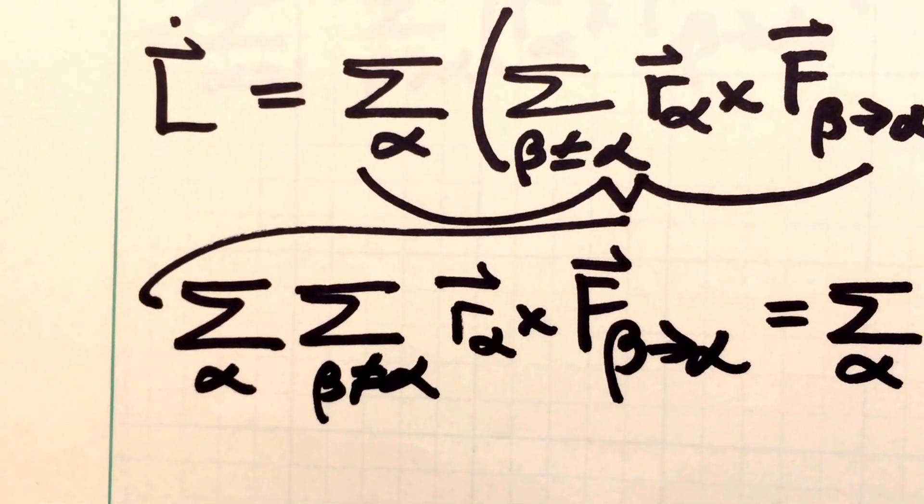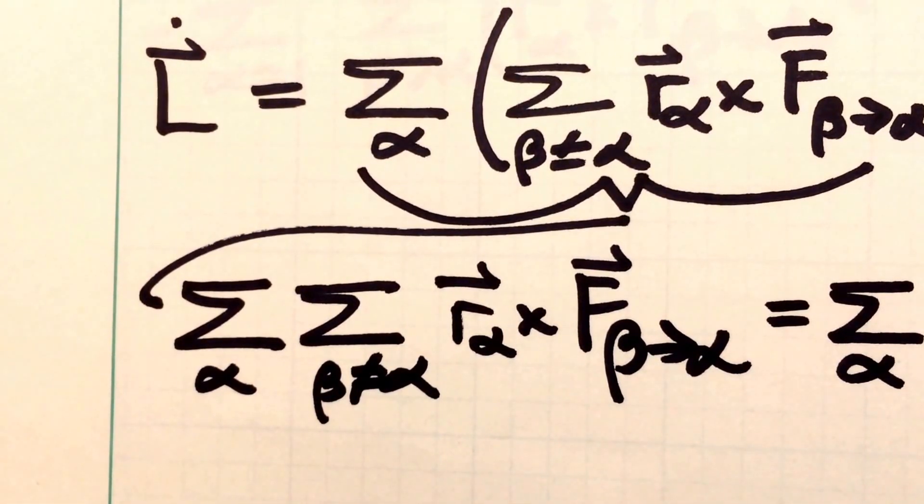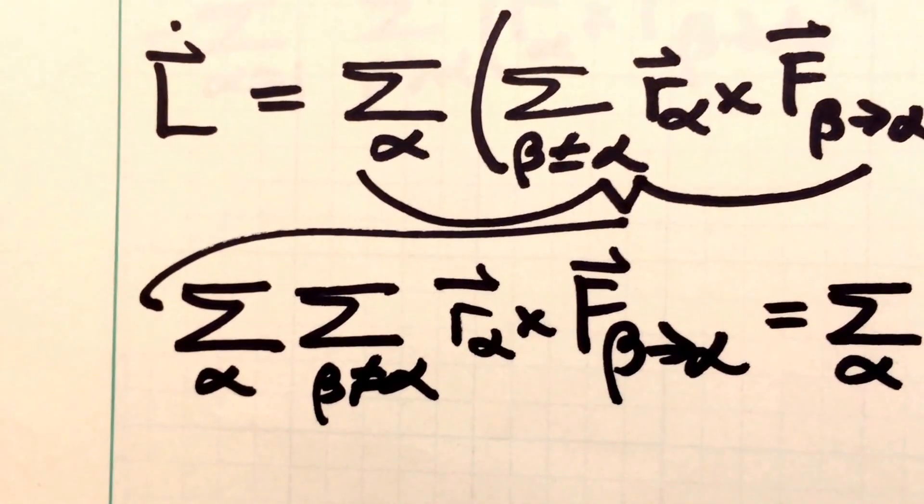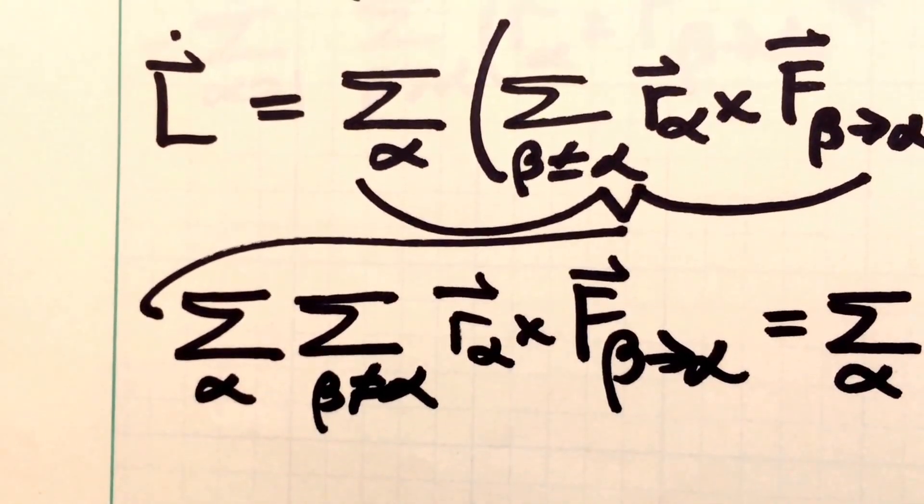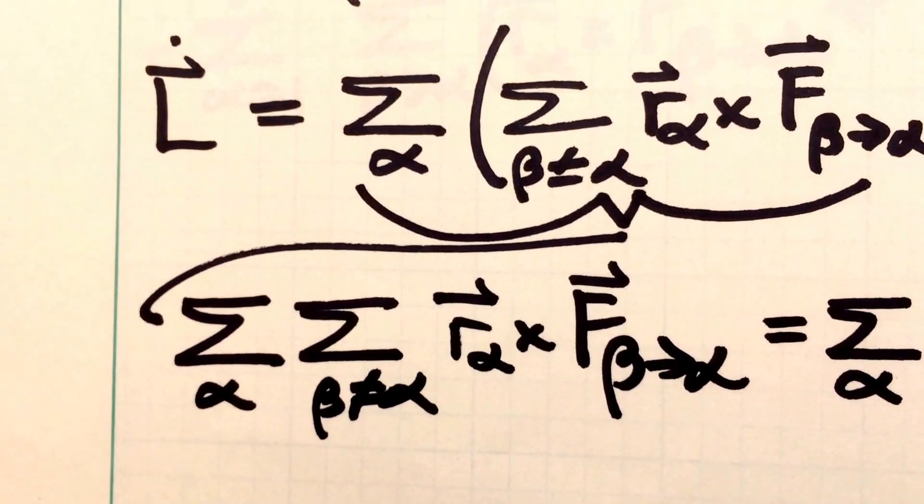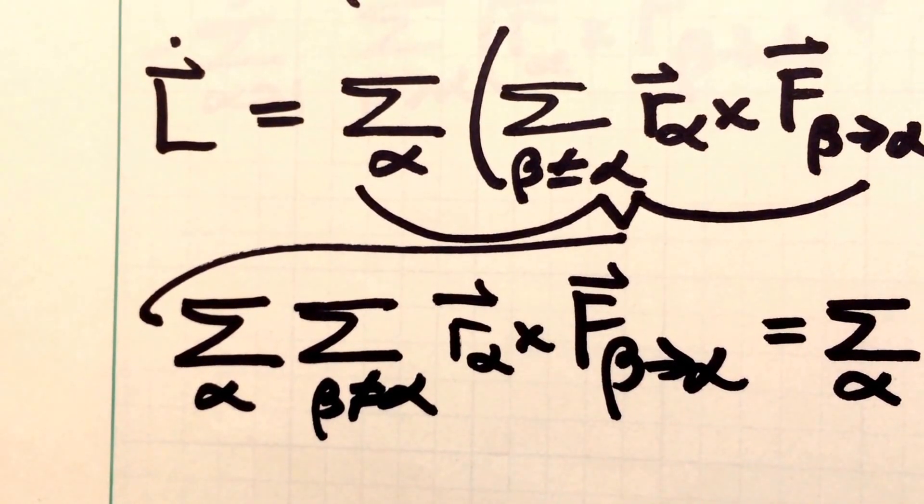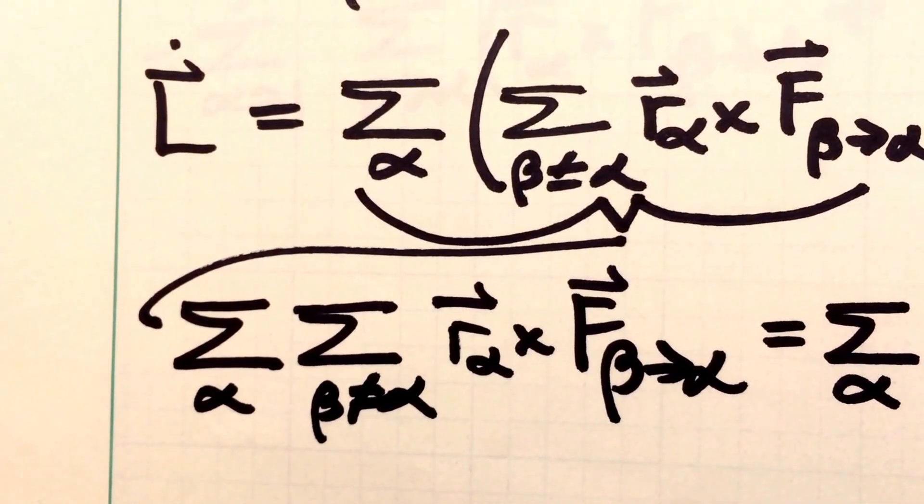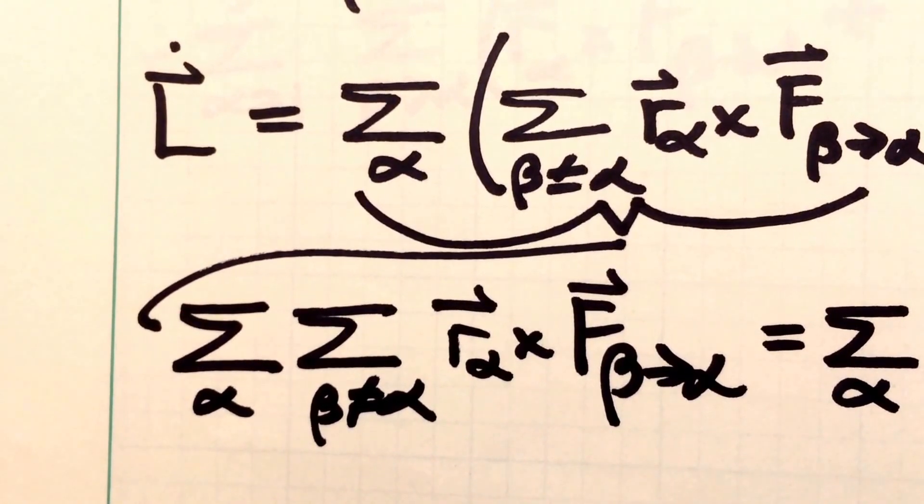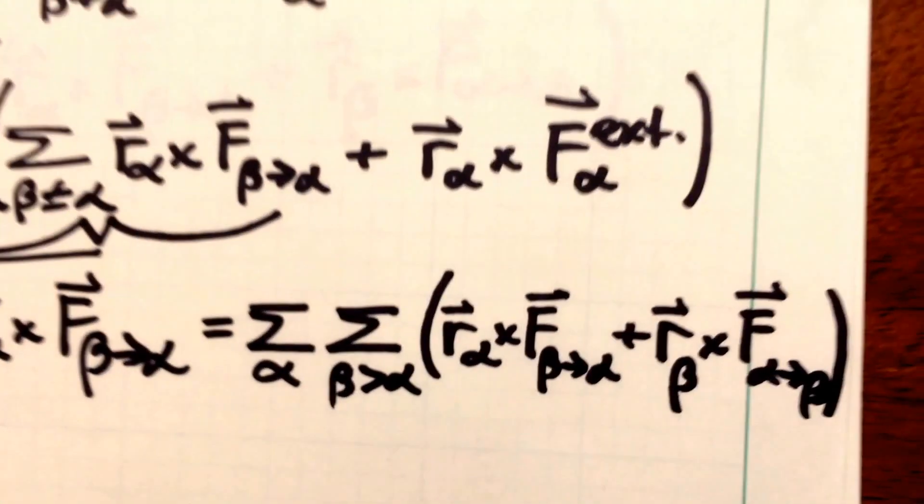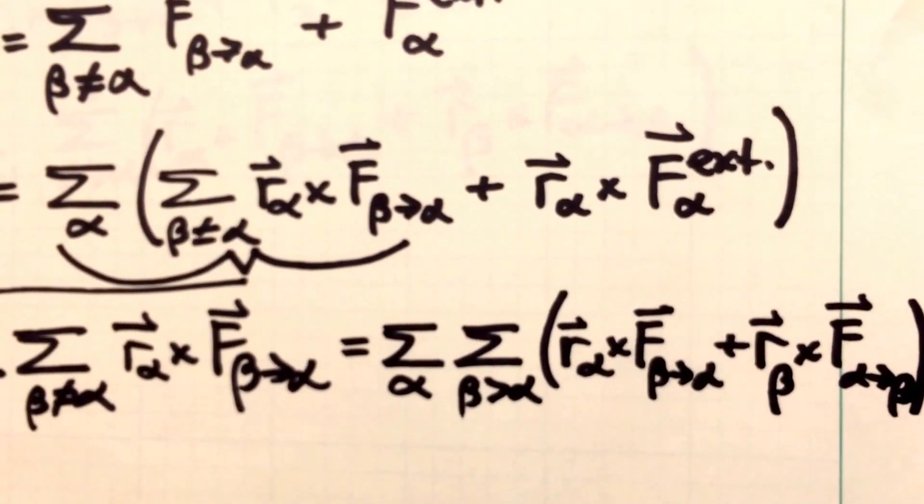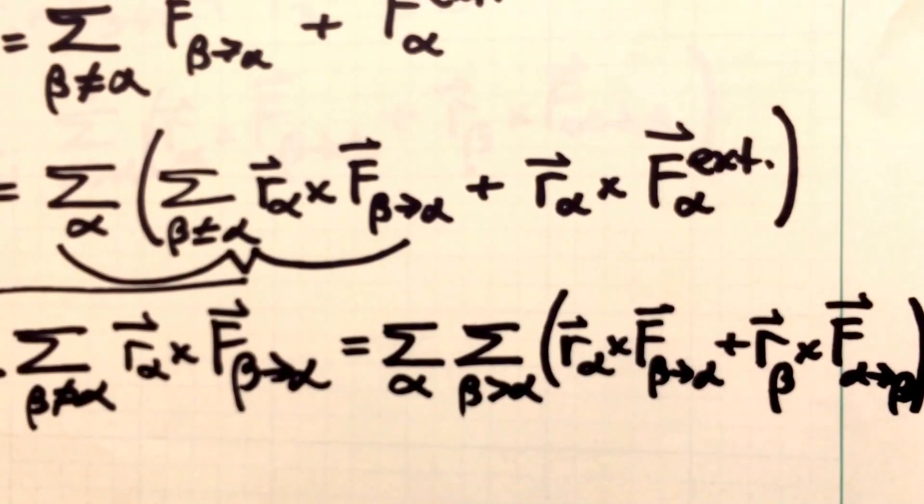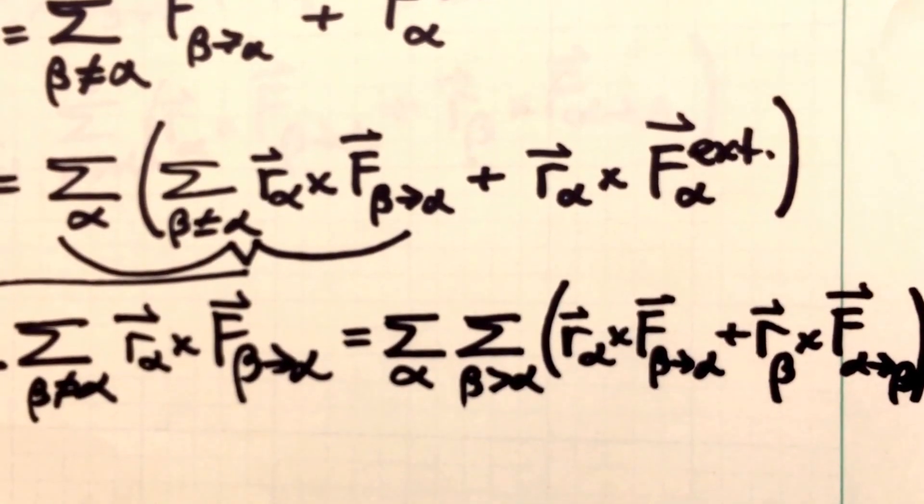so alpha goes from 1, 2, 3, 4, all the way up to n, however many particles we have. And then there's a second sum, beta not equal to alpha. So for example, when alpha equals 1, beta is never equal to 1 in that sum. So we take this sum and we can rewrite it in this way so that we have a sum over alpha and a sum over beta greater than alpha.